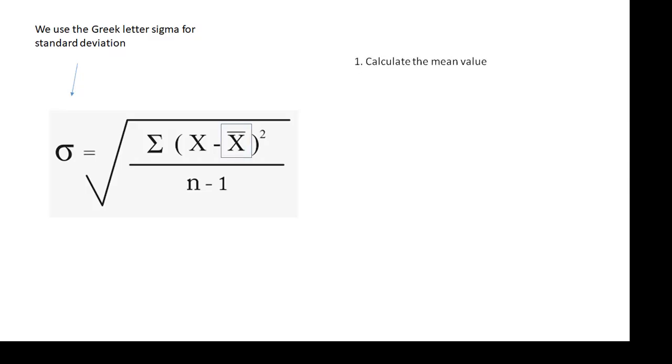So you calculate the mean value. That's the x bar. That means the mean value. Bar above it means the average. So work out the mean value. Then for each of the results calculate the difference between it and the mean. The difference between each result and the mean. And then square it.